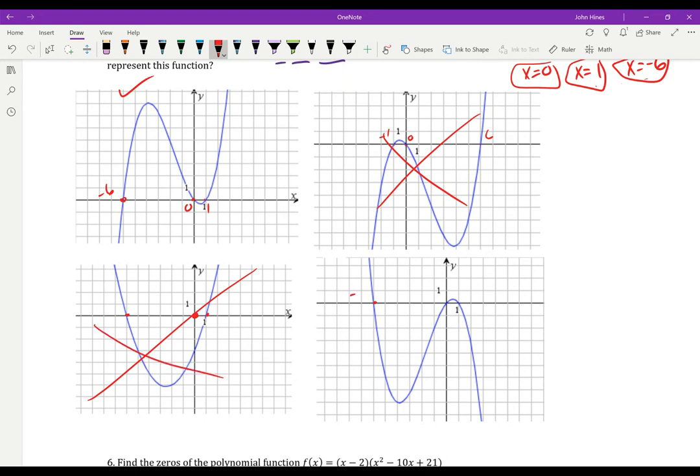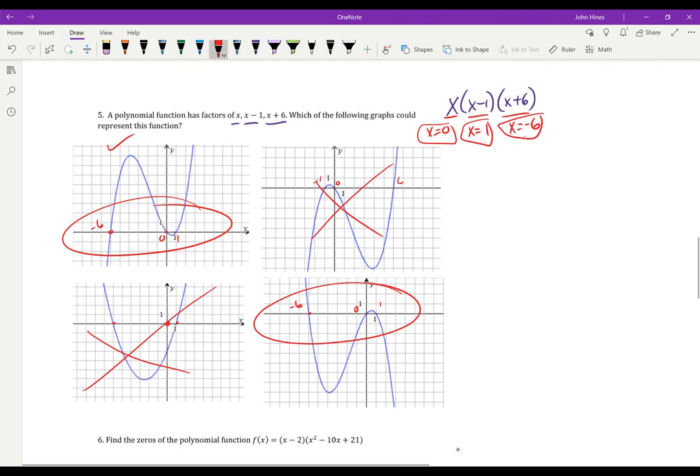1, 2, 3, 4, and then negative 6, 0, and 1. This one's also good. So it looks like these two parabolas here are, sorry, not parabolas. Those two cubic polynomials here, the first one and the fourth one, are my answer.